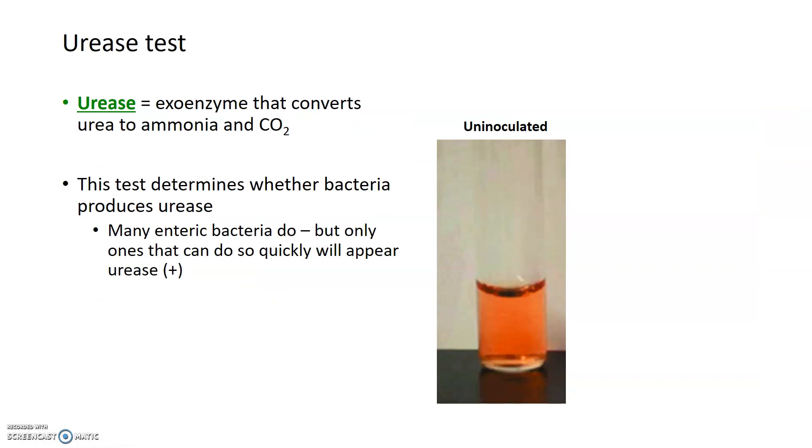The last test we're going to talk about is a urease test. Urease is also an exoenzyme, just like the enzymes required to hydrolyze starch, but its job is to convert urea into ammonium and carbon dioxide. A urease test is simply done to determine whether a bacteria produces urease or it doesn't. Many enteric bacteria or bacteria that live in your gut and intestines do produce urease because those environments are very high in urea and having urease allows them to degrade that urea effectively.